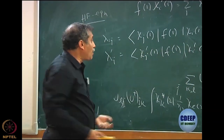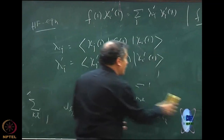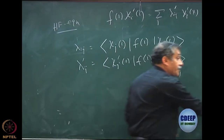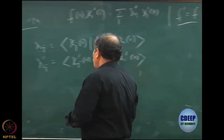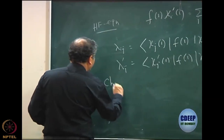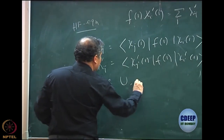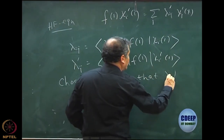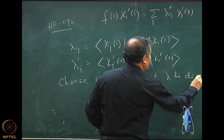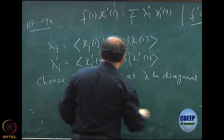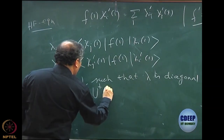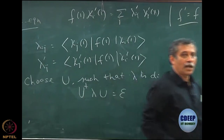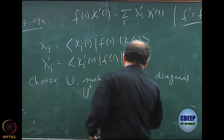Without any further ado, I would now say: choose a matrix U — because I have several unitary transformations — such that lambda is diagonal. Something like U†λU = ε, where ε is a diagonal matrix.